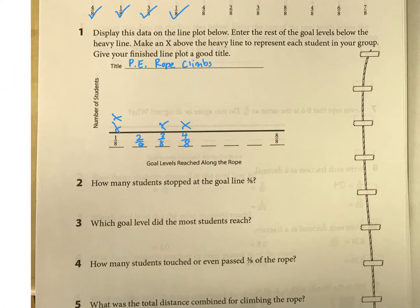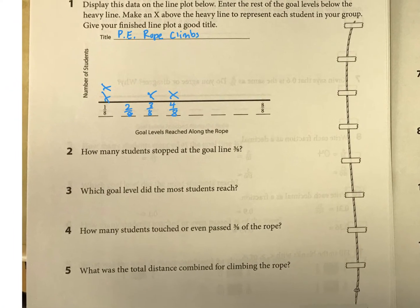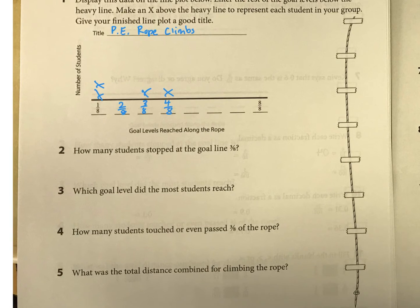Then we're thinking about our data. So how many students stopped at the goal line of three eighths? Well, once your chart is done, just look and see how many X's there are for that. What goal level did the most students reach? That is called the mode, and that's going to be whatever fraction has the highest stack, right? What has the most X's is going to be the mode there.